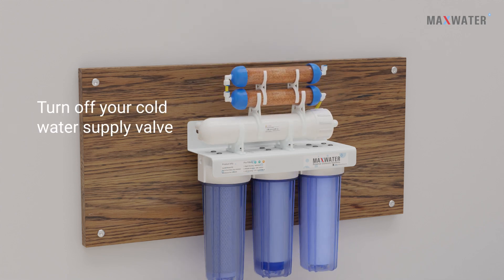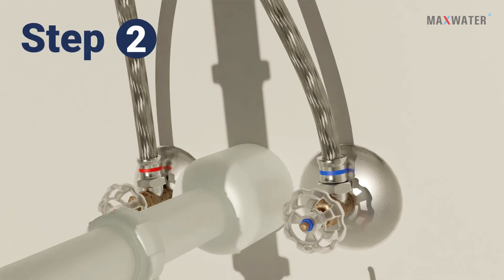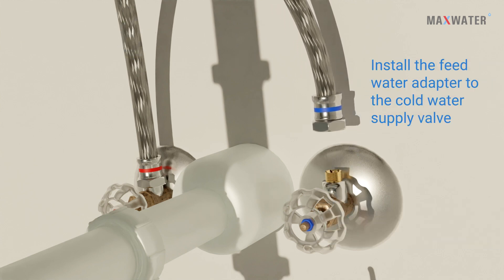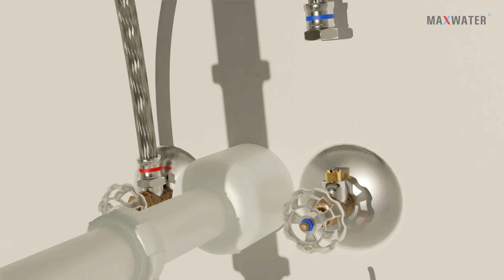Step two: unscrew the faucet connector pipe, install the feed water adapter to the cold water supply valve, and tighten it with a wrench.